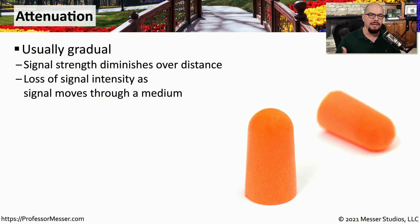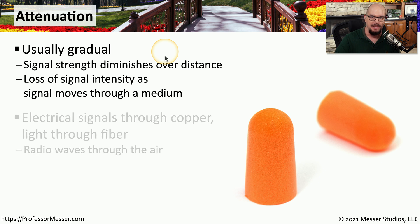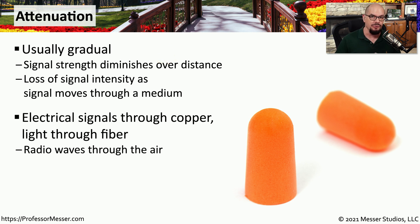If you've worked with network cabling or fiber, you know the longer the distance, the more the signal tends to degrade. That loss of signal as you extend the distance is referred to as attenuation, and it's usually a gradual diminishing of signal over a longer distance. This attenuation occurs whether you're sending an electrical signal over copper or light over fiber. Eventually, that signal will degrade so much that the receiver at the other end won't be able to interpret any of it.